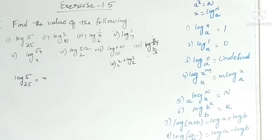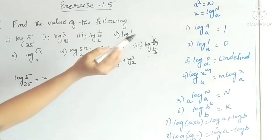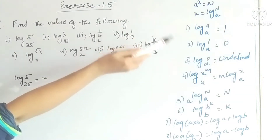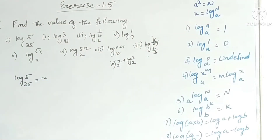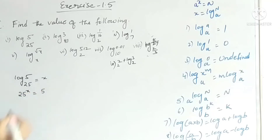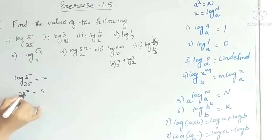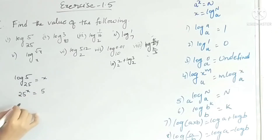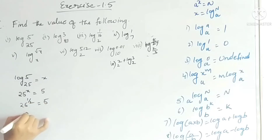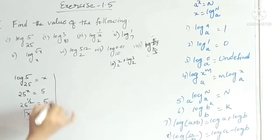Let log 5 base 25 equal x. The exponential form is: if x equals log n base a, then a to the power x equals n. So 25 to the power x equals 5. The square root of 25 is 5, so 25 to the power 1/2 is 5, meaning x equals 1/2.